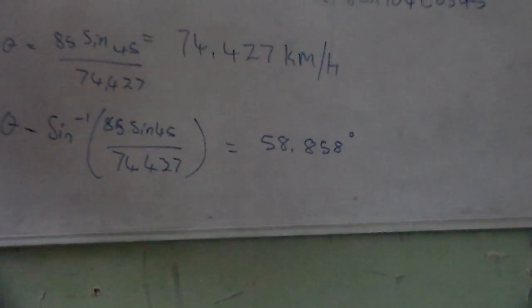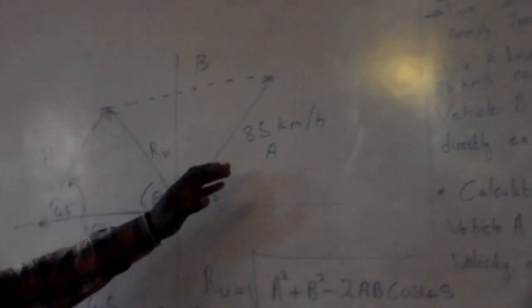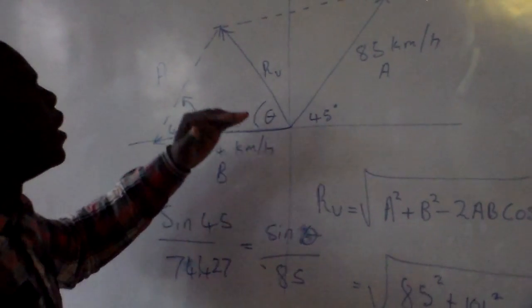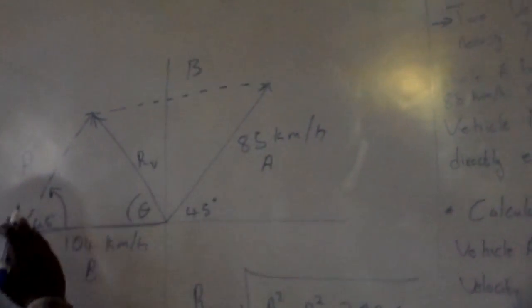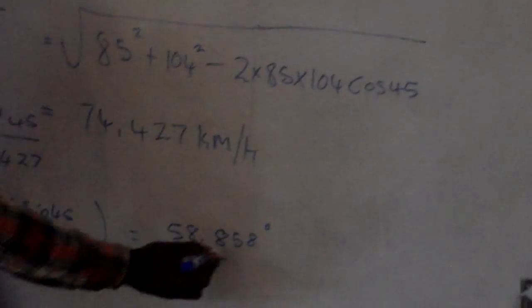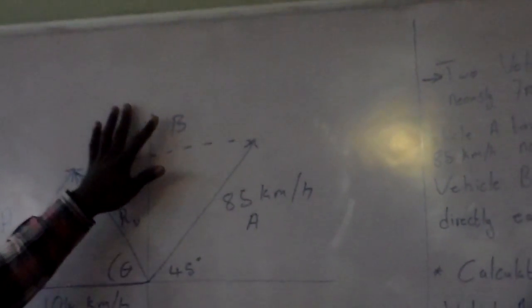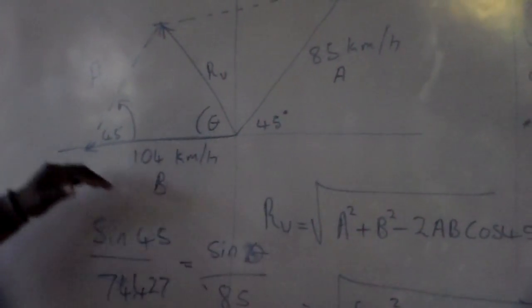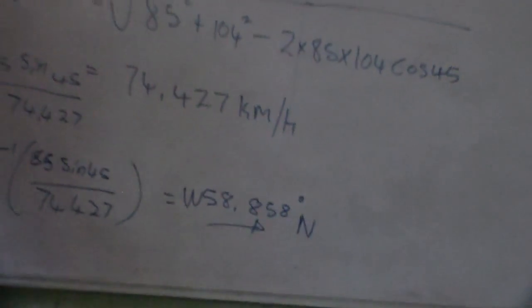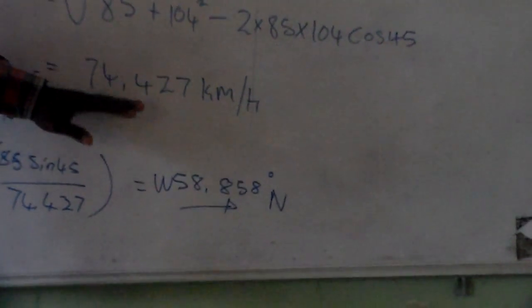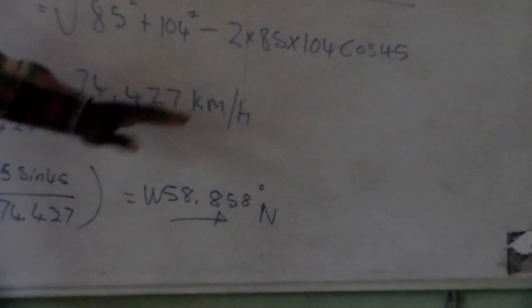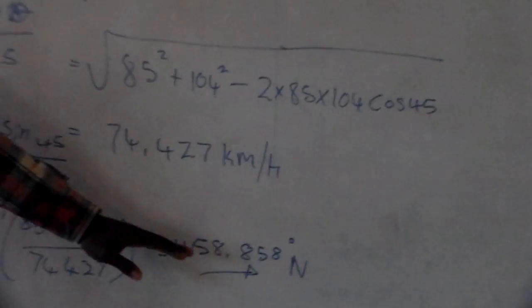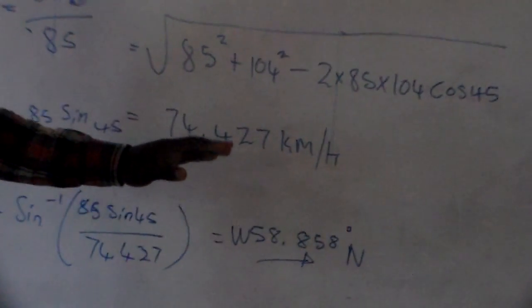So we have found theta to be 58.85 degrees. Remember, we are calculating the velocity of vehicle A relative to vehicle B. Since our angle is greater than 45 degrees and we start from north, the direction is west of north. Therefore, the relative velocity of A with respect to B is 74.427 km/h in the direction of west 58.85 degrees north.